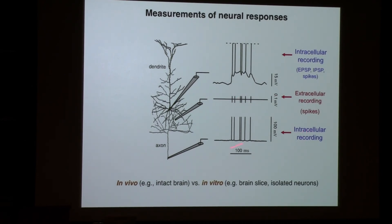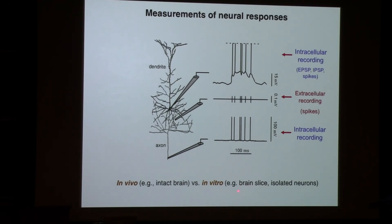Recording from inside a neuron is very difficult because the neuron is only about 50 microns in size and the brain is moving. So most scientists place the electrode outside nearby — extracellular recording — which also picks up action potential spikes. You can also do intracellular recording on an axon, but that is extremely difficult. The two types of recording we will deal with in lectures are intracellular and extracellular recording. There is also the distinction between in vivo — recording from an intact, living brain — and in vitro — neurons studied in a dish.